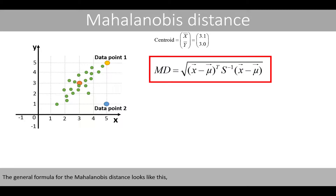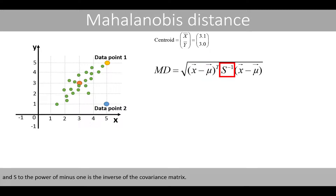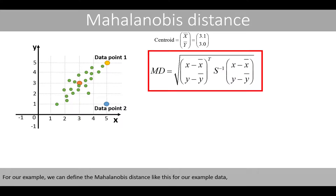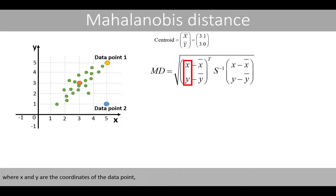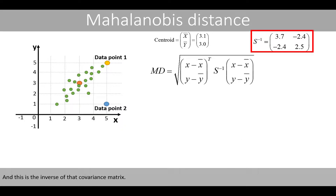The general formula for the Mahalanobis distance is defined where x is a vector of the coordinates of the data point, mu is the mean vector or centroid, and S to the power minus 1 is the inverse of the covariance matrix. For our example, x and y are the coordinates of the data point, and x-bar and y-bar are the coordinates of the centroid. The covariance matrix was computed based on the data points in the plot, and this is the inverse of that covariance matrix.